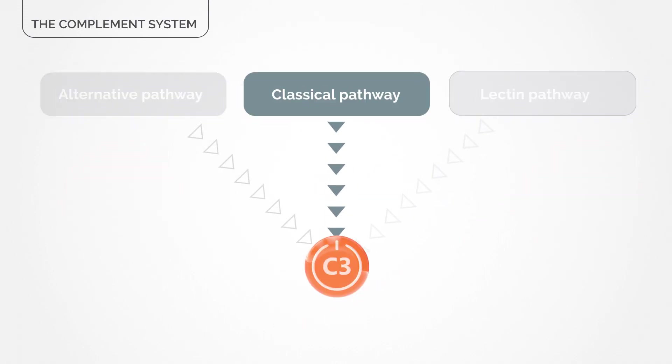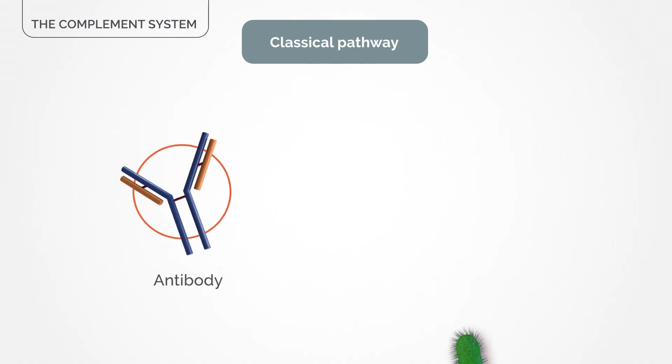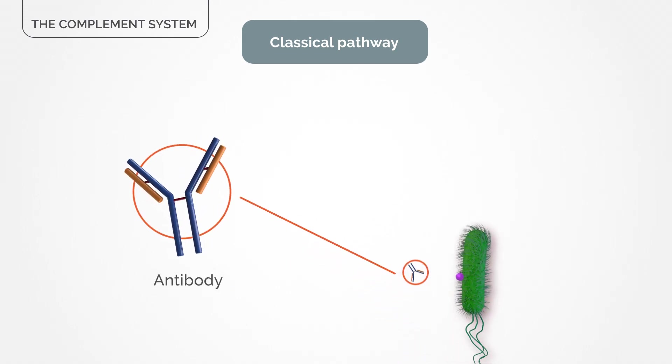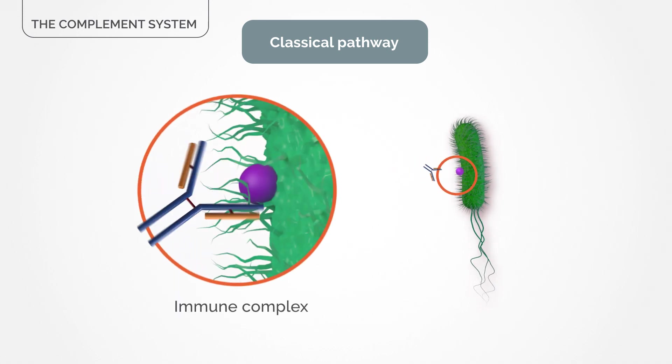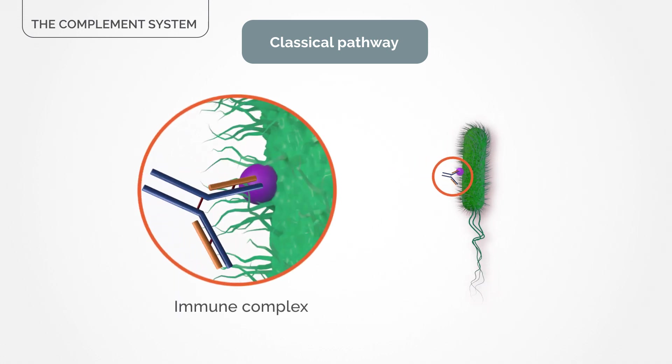The classical pathway is activated when an antibody, a protein produced by our immune system, recognizes and binds to a component on the surface of a foreign cell, forming an immune complex, starting an immune response that targets the pathogen for destruction.